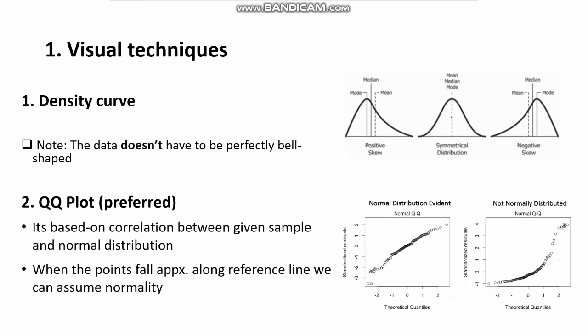Another technique I personally prefer to the density curve is using the qqplot, which is based on the correlation between your sample and the normal distribution. This graph is also preferred to the histogram when you have a small sample size. A 45-degree reference line is plotted. If the points fall approximately along the reference line, we can assume normality because there is a high correlation between your data and the theoretical normal distribution. If not, the data is not normally distributed.